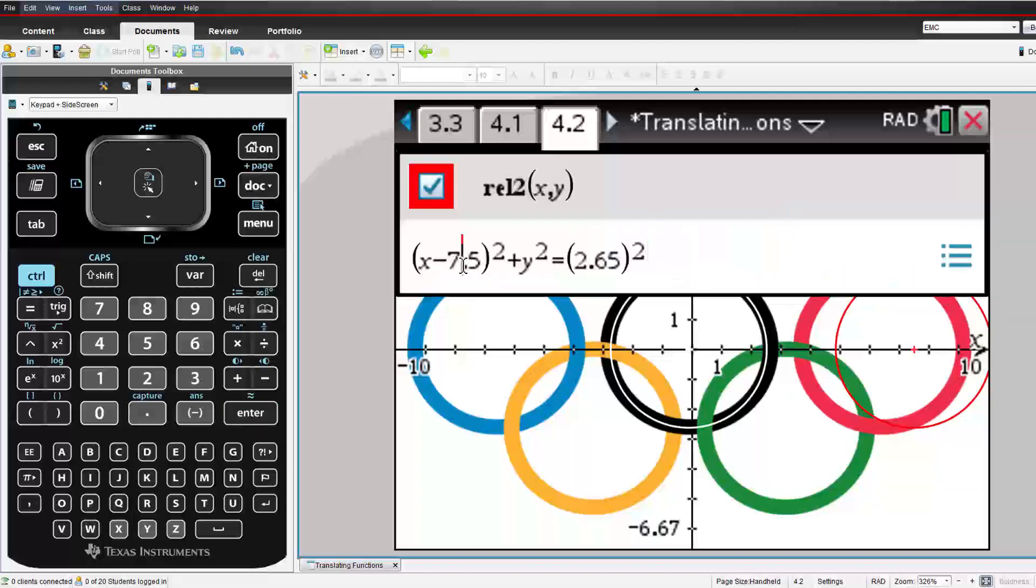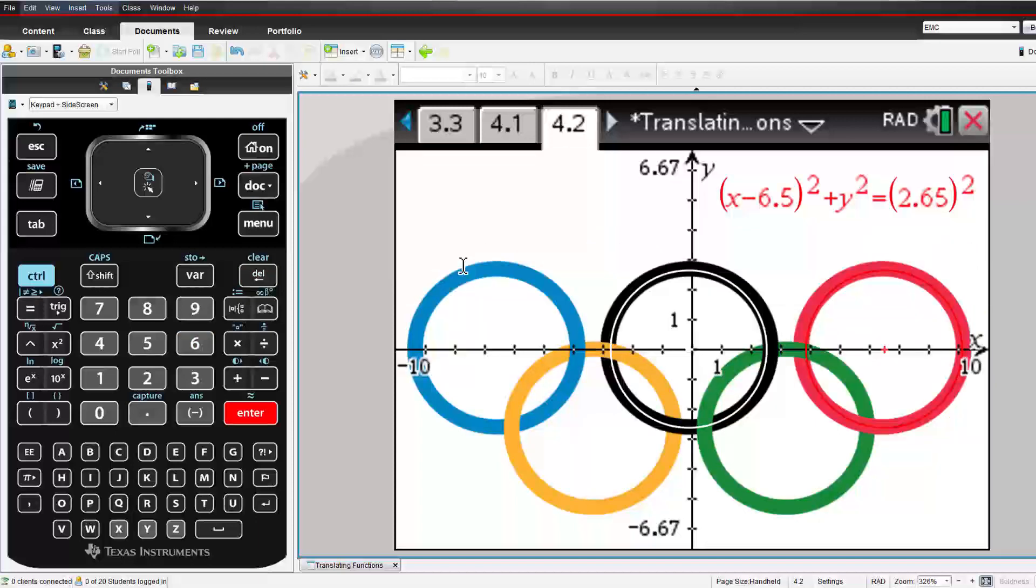The whole idea of this is that the calculator is giving the students instant feedback. They can see what they need to change. And now, with a red circle on a red ring, I'm pretty happy that my red Olympic ring is correct.